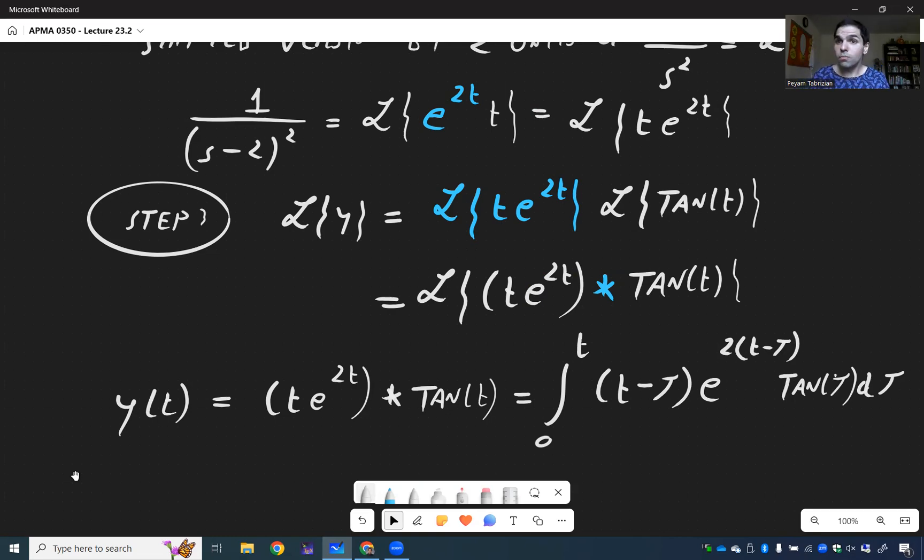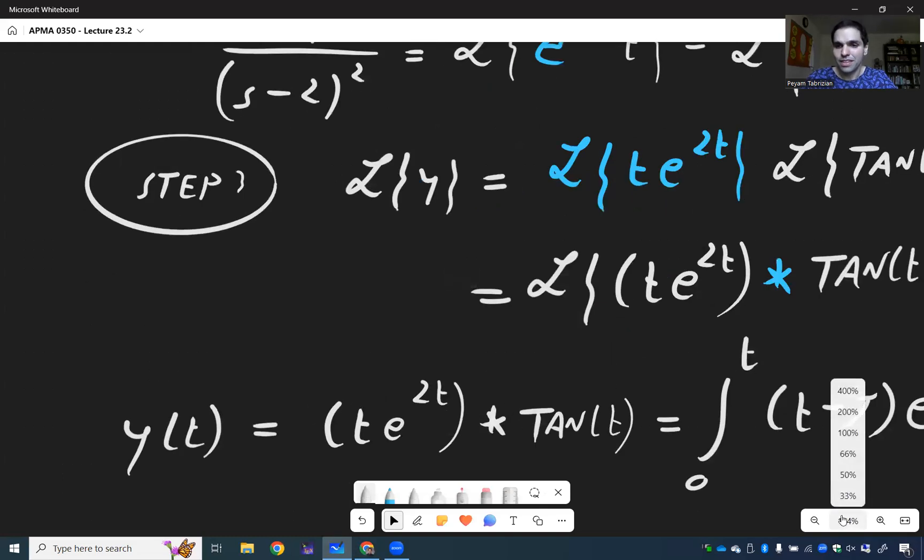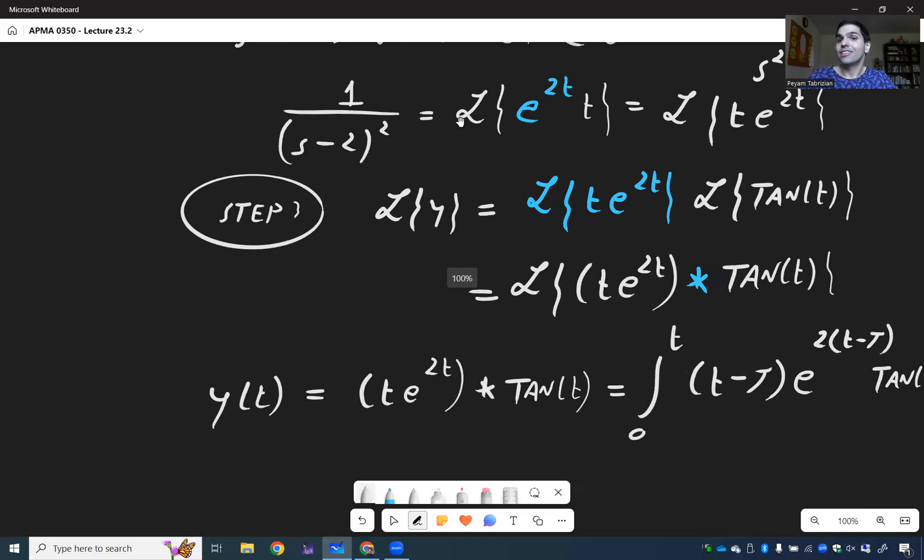But still, it's good because you can, for instance, put this into Desmos or Wolfram Alpha, and they can at least give you an approximate graph of what the solution looks like. Which is cool. And this is really the most general way to solve this if you're okay with integral solutions. In the next video, there's a little surprise goodie.